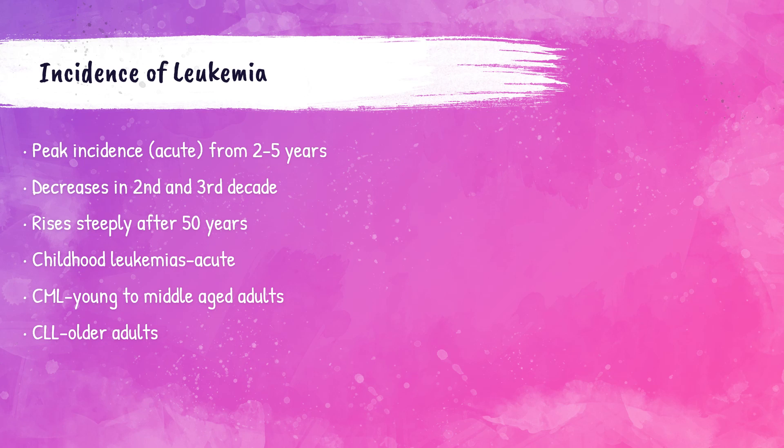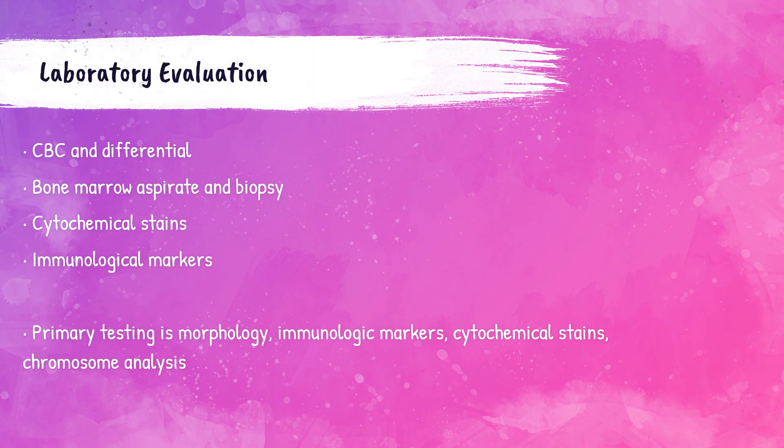The peak incidence of acute leukemias is from two to five years of age, decreasing in the second and third decade of life, then rising steeply again after age 50. Child leukemias tend to be the acute versions. CML (chronic myelogenous leukemia) usually occurs in young to middle-aged adults, while CLL (chronic lymphocytic leukemia) occurs in older adult patients.